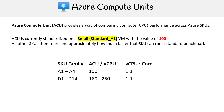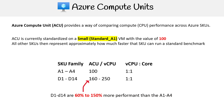Here we have the A1 to A4 series against the D1 to D14 series. A1 is our baseline at 100 ACUs, and it has a one-to-one ratio from vCPUs to core. For D1 to D14, it shows 160 to 250 points — so basically 60% to 150% more performant than choosing an A1 to A4. That's how that works.